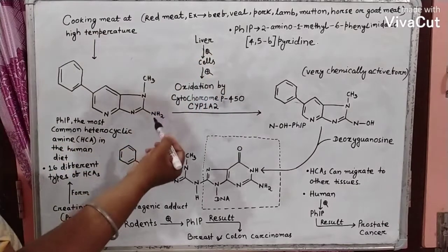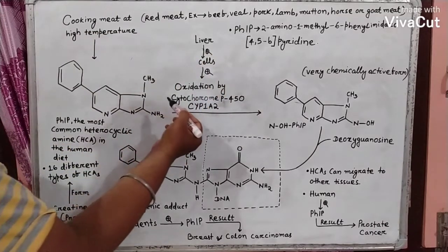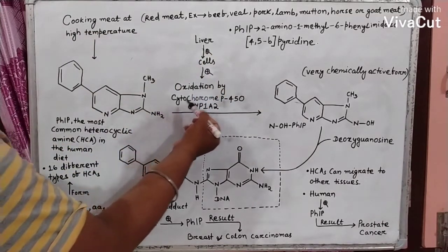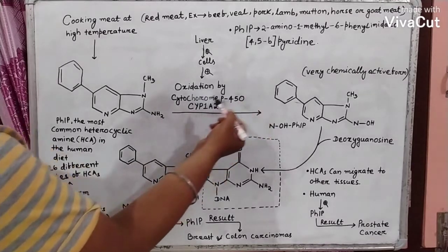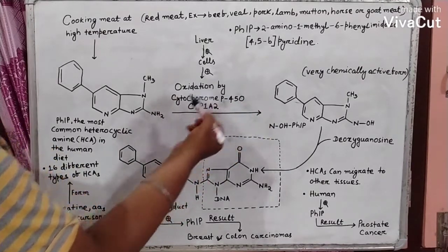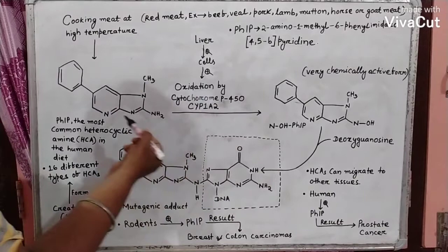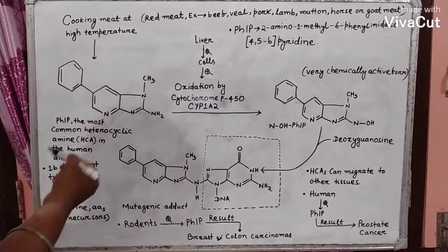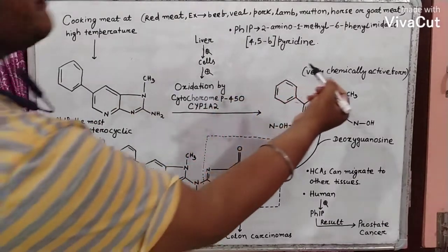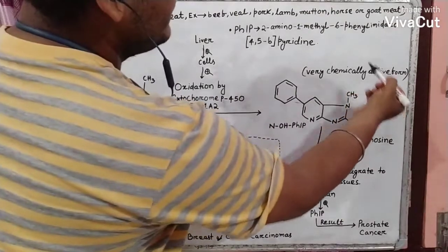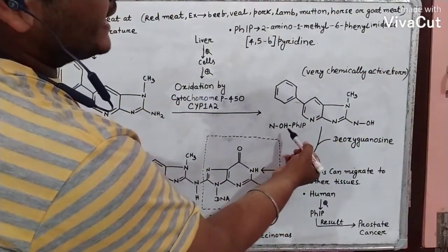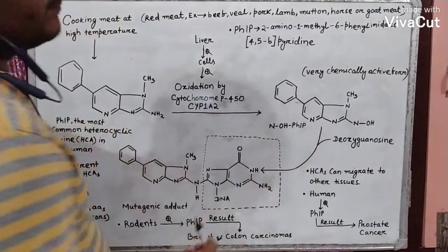In liver cells, in the presence of an enzyme called cytochrome P450 CYP1A2, PHIP is converted into a very chemically active form called NOHPHIP.